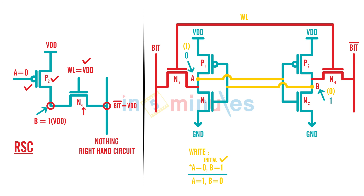Let's go through it step by step. The initial condition is A = 0 and B = 1. First, we make the word line high. When the word line is high — equal to VDD — that input goes to N3 and N4, turning them on. Next, we make the bit line equal to VDD and the bit bar line equal to 0. In the future clips we will see how this is done in practice.